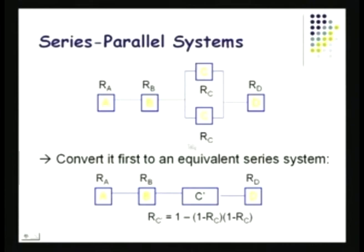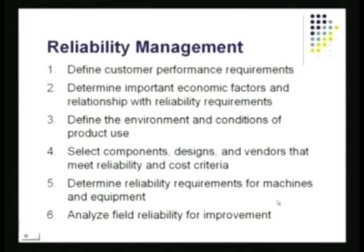For a complicated system with a mixture of parallel and series components, the rule of thumb is: convert all the parallel items first, compute the total reliability of all parallel subsystems, replace each parallel subsystem by one equivalent component C-prime, then put the rest in series. This is exactly what has been shown — the two parallel components are replaced by C-prime, the equivalent, and the rest remain in series to compute the total system reliability.